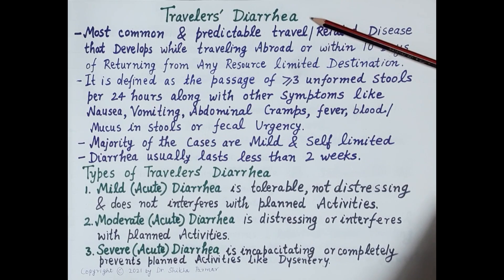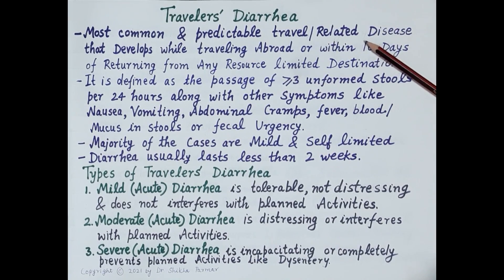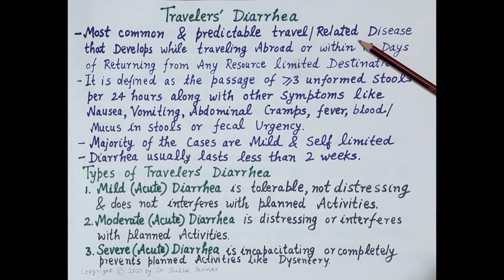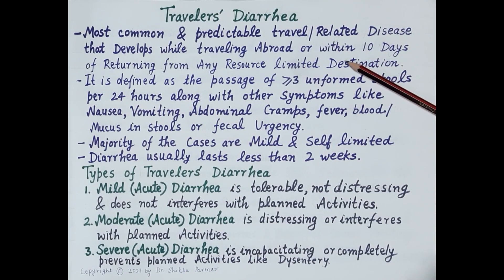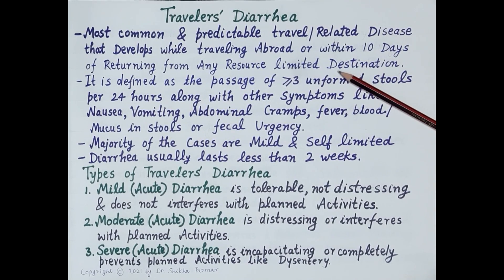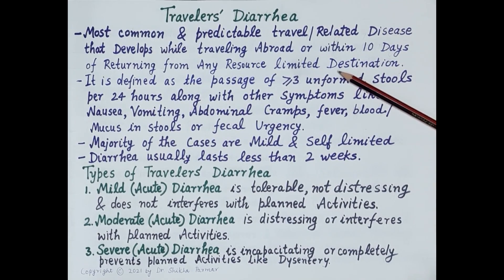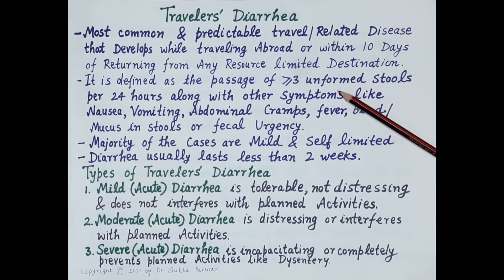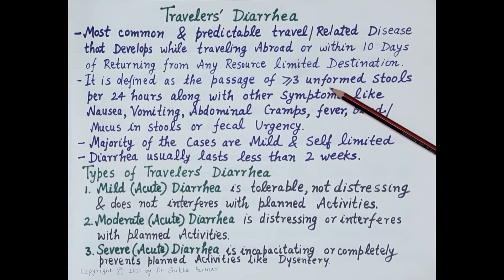Travelers' diarrhea is the most common and predictable travel-related disease. It develops while traveling abroad or within 10 days of returning from any resource-limited destination — that is, returning from either a developing country or a rural area. Travelers' diarrhea is defined as the passage of three or more unformed stools